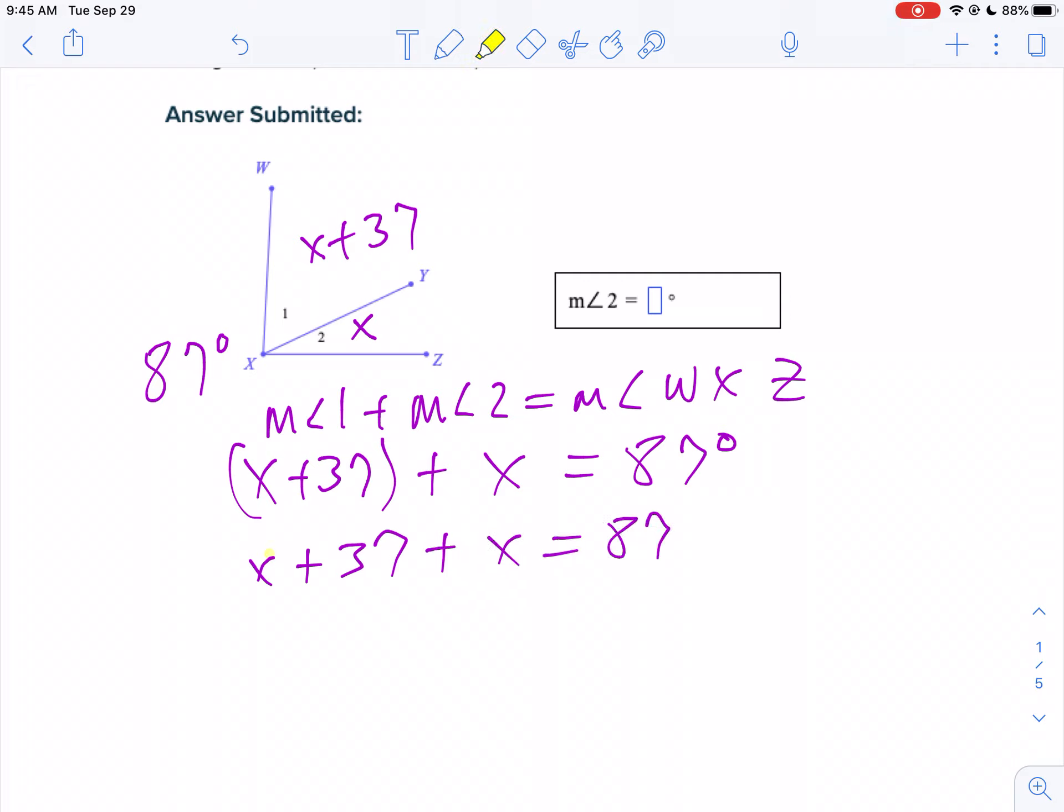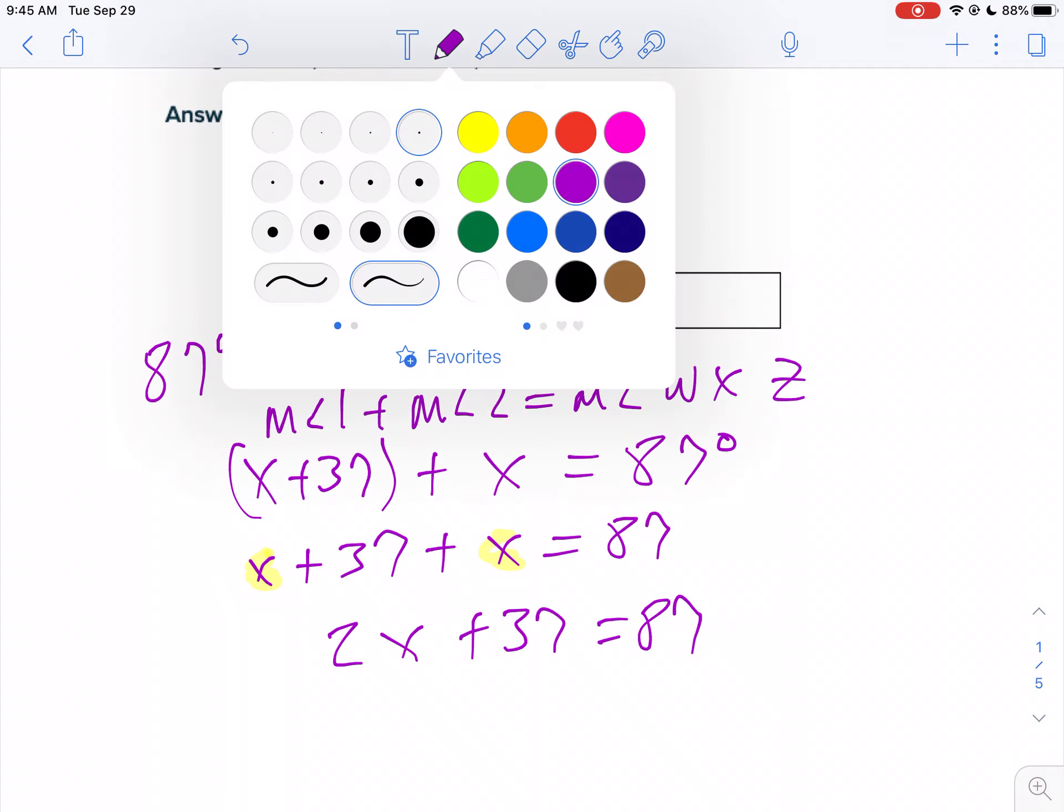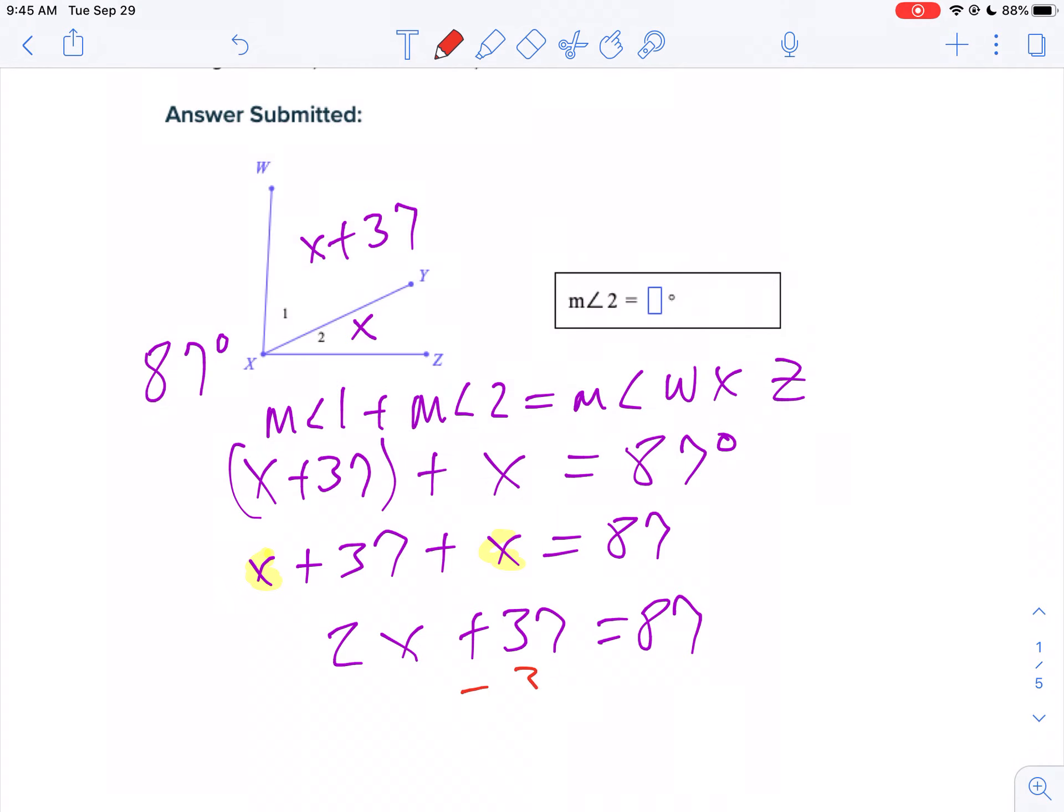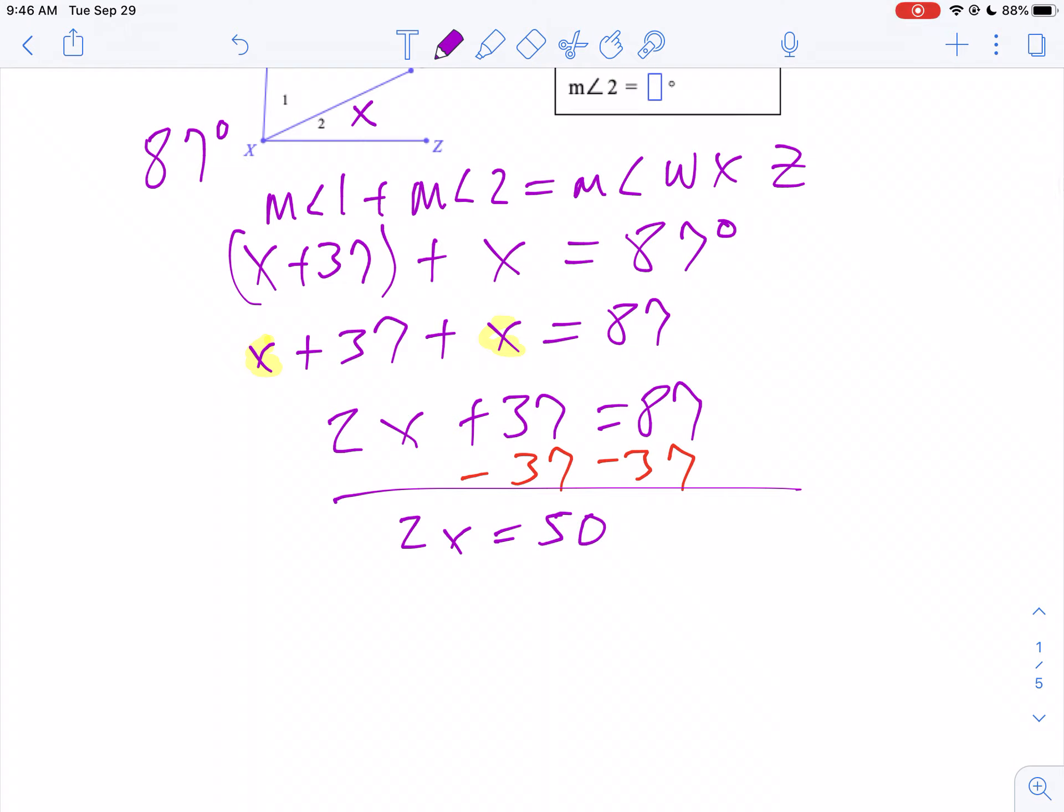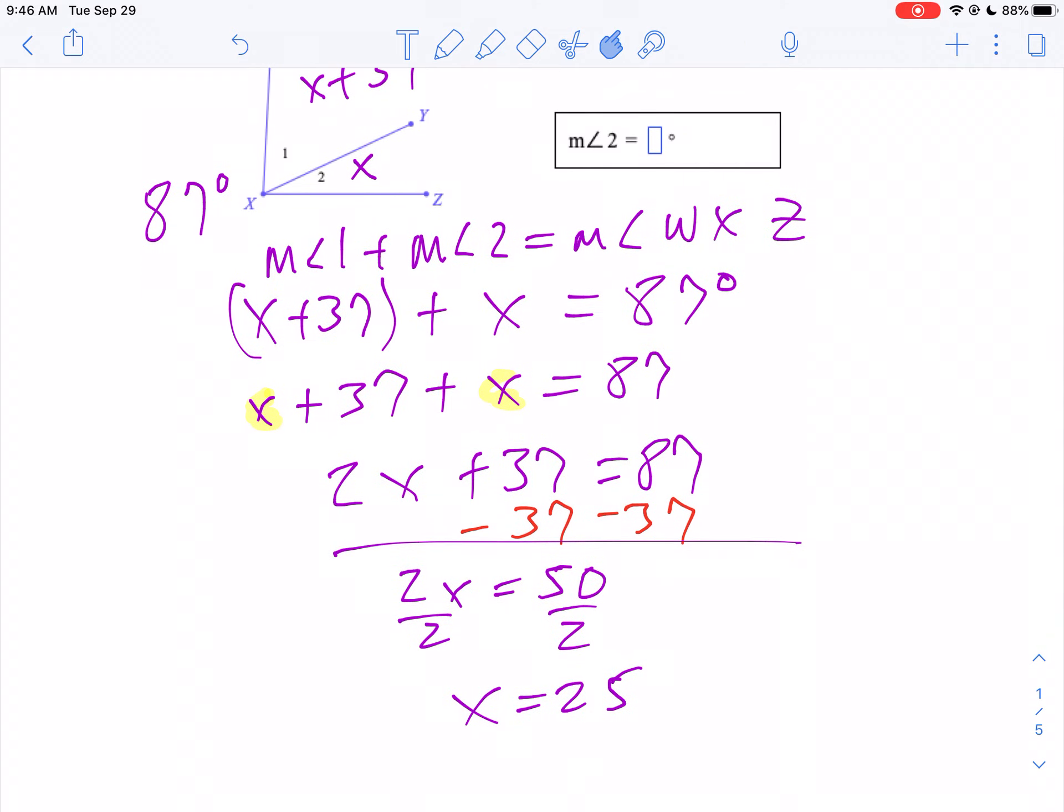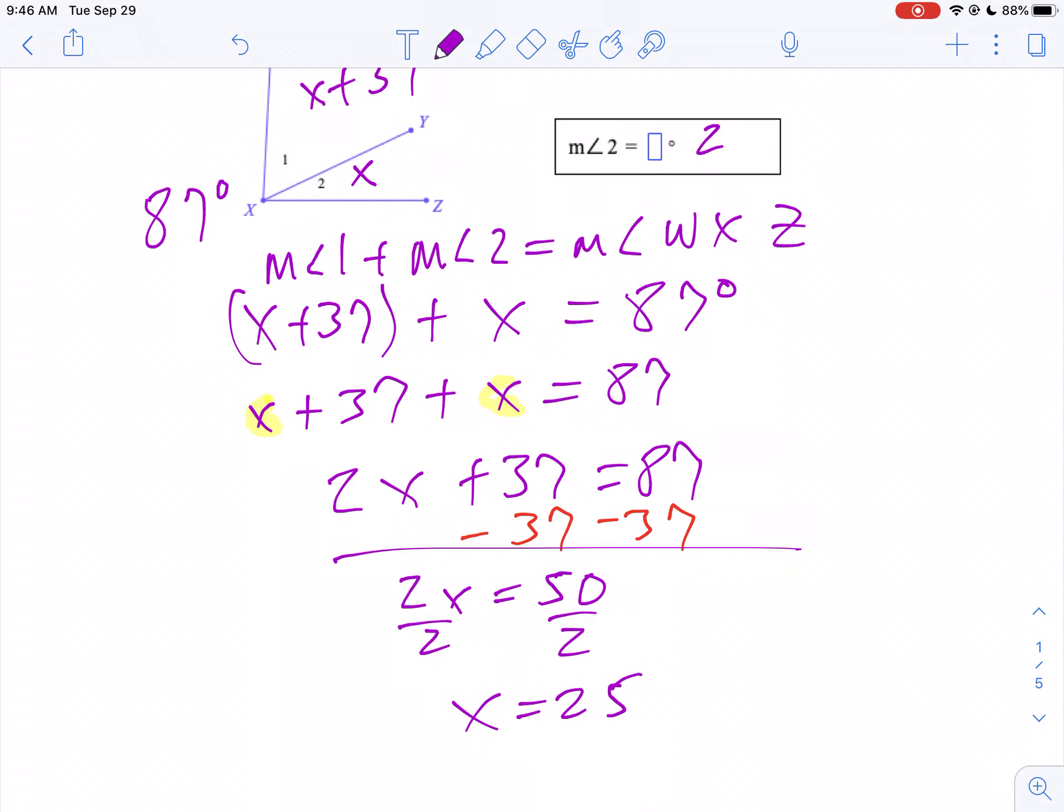Well, we can combine our like terms. X plus X is 2X. So 2X plus 37 equals 87. Now we'll do the algebra. To get X by itself, we want to undo adding 37. Well, the opposite of adding, we're going to subtract 37 from both sides. So then we get 2X equals 50. Now to solve for X, we divide by 2, and X would be 25. Well, X is angle 2, isn't it? So that's all we were looking for on that particular question was to find X, which is 25 degrees.